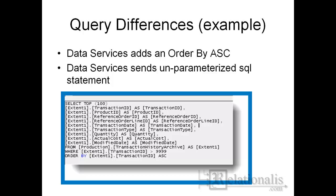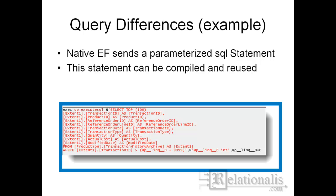The SQL that is generated through the use of data services differs from that of the native client. For example, data services requires data to always be ordered, whereas the native client only does this when the LINQ statement dictates. Data services do not parameterize the query, therefore executing as ad hoc. The query generated by the native client is parameterized and executed using sp_executesql, which causes a reusable execution plan to be generated. The single execution plan keeps the query cache much smaller. Query cache entries get removed by the DBMS under memory pressure.